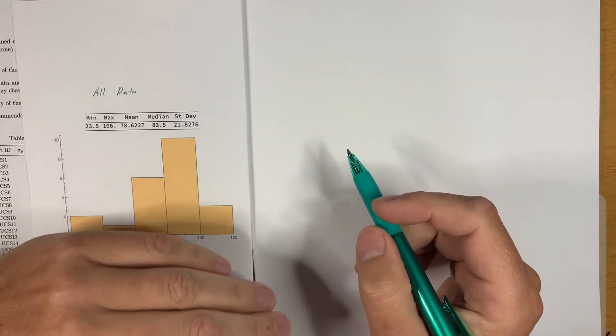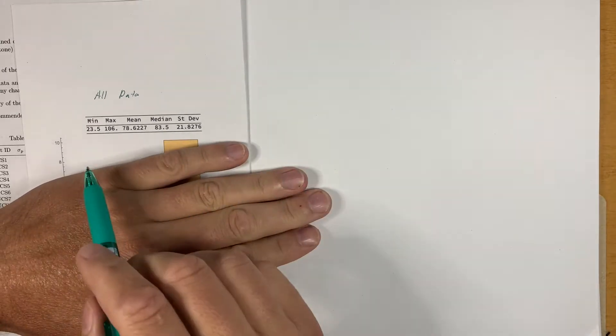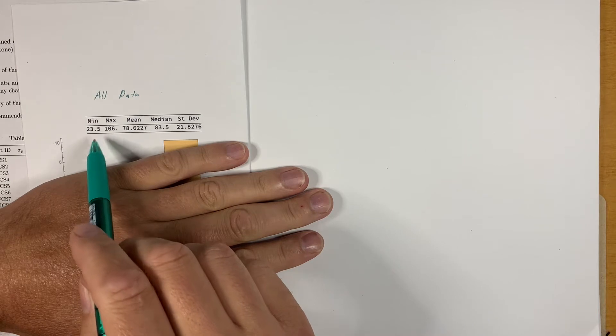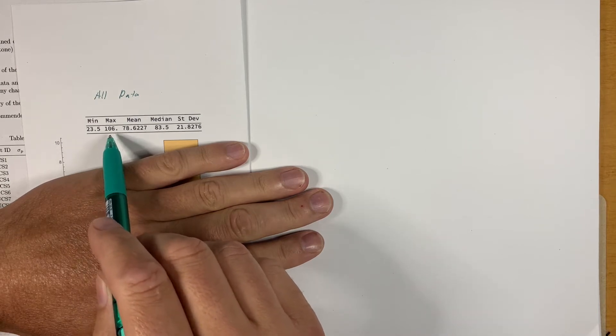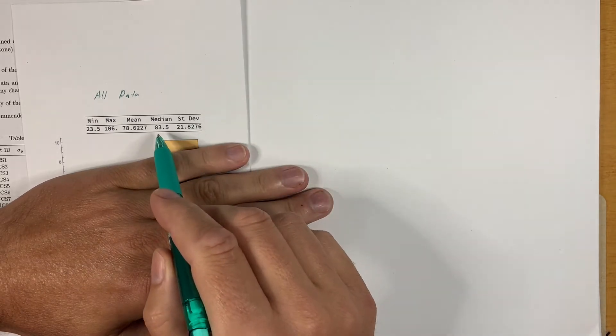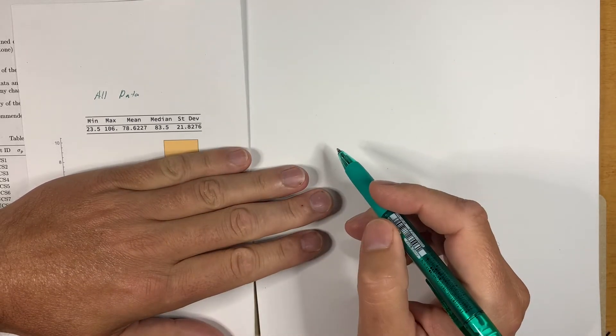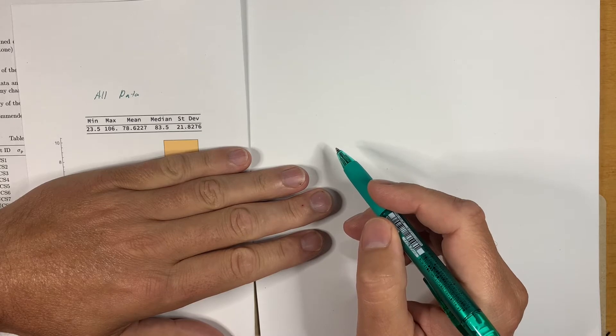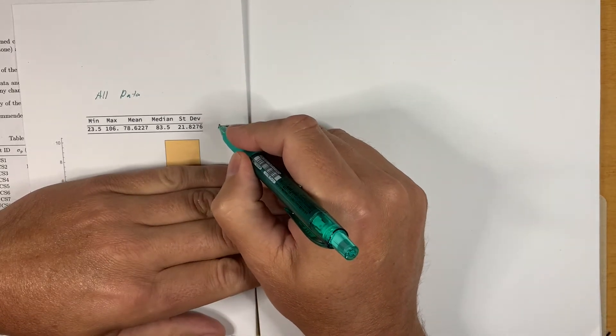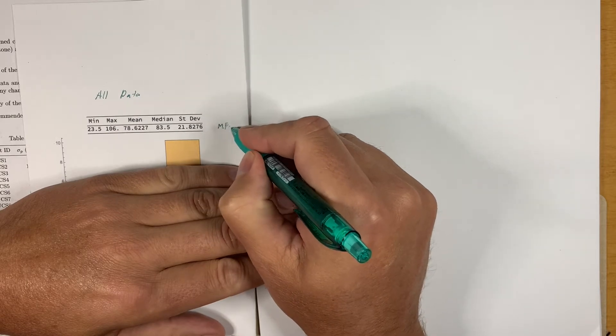For starters, let's just look at the statistics. We have a minimum value of 23.5, a maximum of 106, a mean of about 79, median of 83, and a standard deviation of about 23. And these are all in MPa, all the ones that have units anyway.